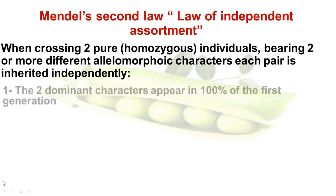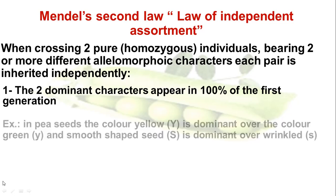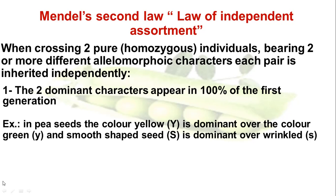The character of being tall or short is completely independent from the character of being black or white, so we can have a tall black, a tall white, a short black, or a short white. In the first generation, the two dominant characters will appear in 100% of the offspring. The pea seeds can have yellow color (dominant) or green (recessive), and can be smooth in shape or wrinkled. We give yellow capital Y, green small y, smooth capital S, and wrinkled small s.